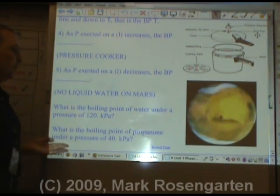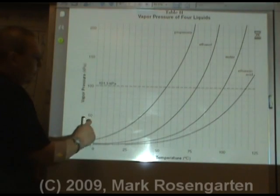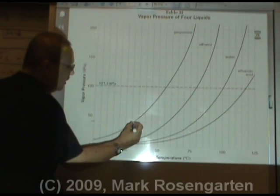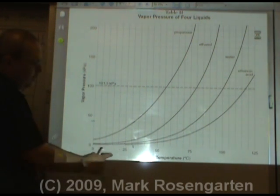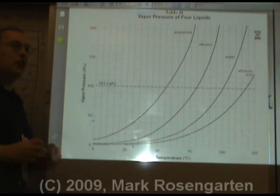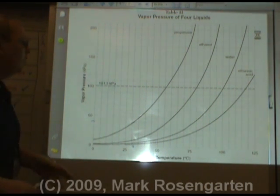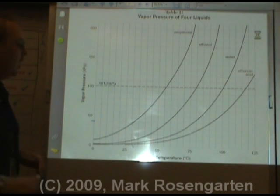What is the boiling point of propanone under a pressure of 40 kilopascals? We find 40 kilopascals, go across to the propanone line, and drop down to the temperature axis — that's about 31 to 32 degrees Celsius as the boiling point of propanone under that pressure.